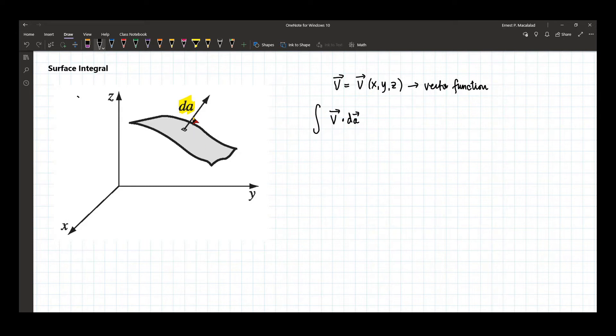It's important to note that this area element dA is actually the infinitesimal area of this area. Now, this arrow represents the area element vector, wherein the vector, this vector, is perpendicular to the surface. The surface element, this surface,